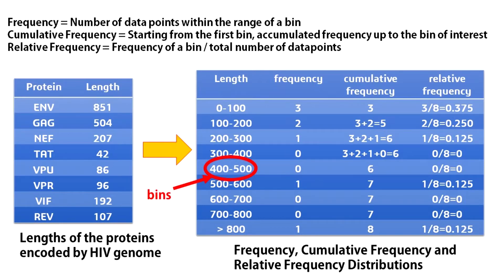Now what is cumulative frequency? For a given bin, its cumulative frequency is the accumulated frequency up to that bin, starting from the first one.